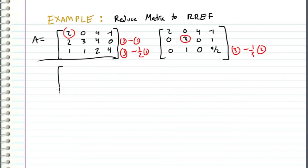So once we do this operation, we get 2, 0, 4, negative 1, 0, 3, 0, 1, and then we have 0, 0, 0, 0, and then we have 9 halves minus 1 third, which is going to be 25 over 6.